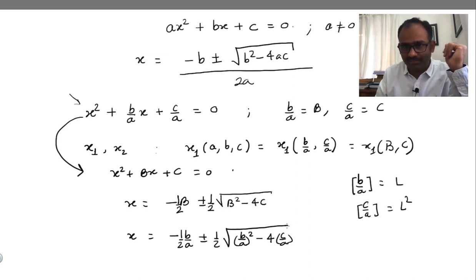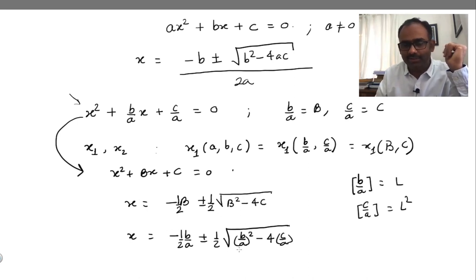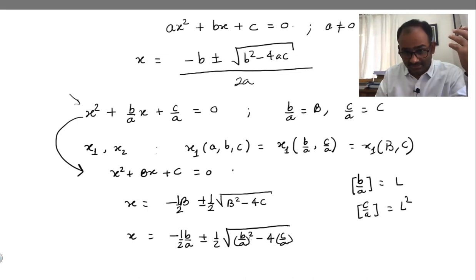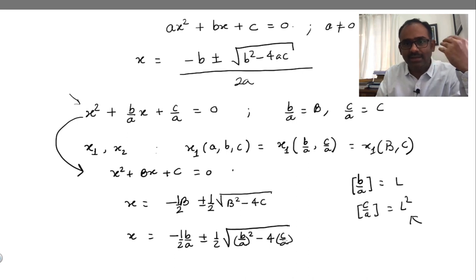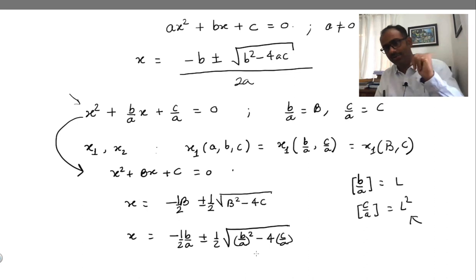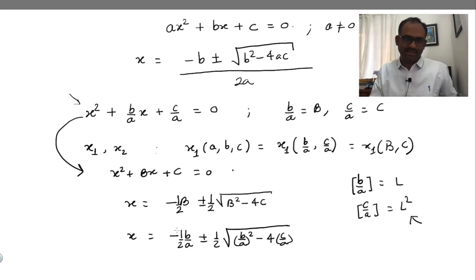Let's check whether this is reflected in the solution. x has dimension of length; b over a has dimension of length — good. In the square root term, (b/a) squared gives dimension of length squared, and c over a already has dimension of length squared, so the quantity under the square root has dimension of length squared. Taking the square root gives an object of dimension of length, so it makes sense to add these terms.